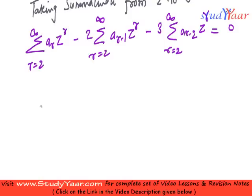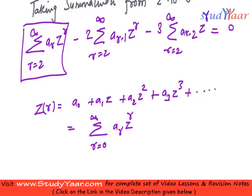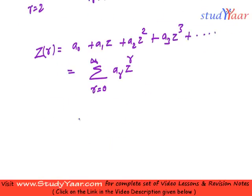Now just understand that Z(R), which is the generating function, is equal to A_0 plus A_1 Z plus A_2 Z^2 plus A_3 Z^3. So this is basically sum from 0 to infinity of A_R Z^R. You have over here sum from 2 to infinity of A_R Z^R. So what is going to be this?